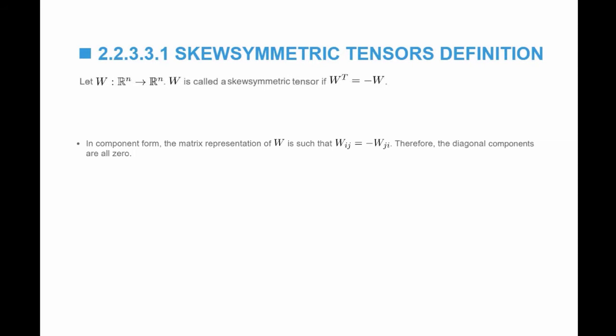So in component form, that means that WIJ is equal to negative WJI.